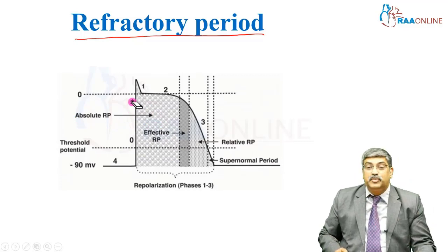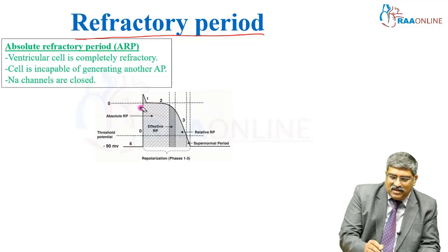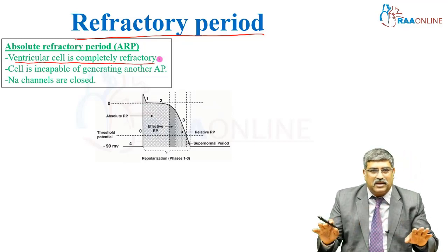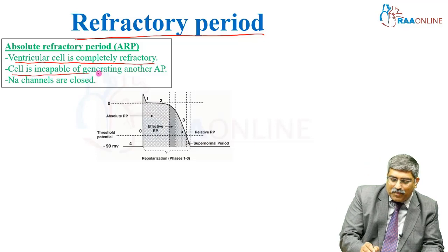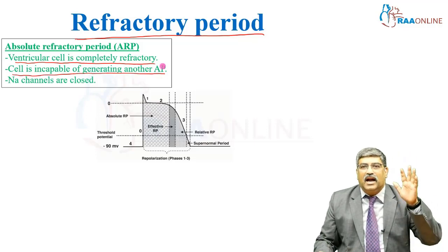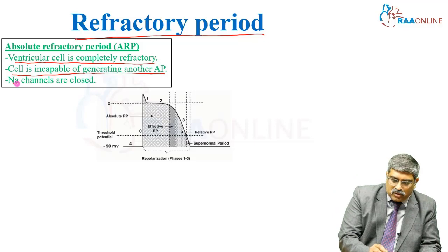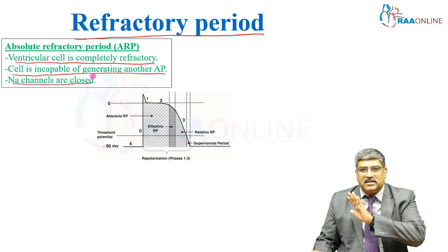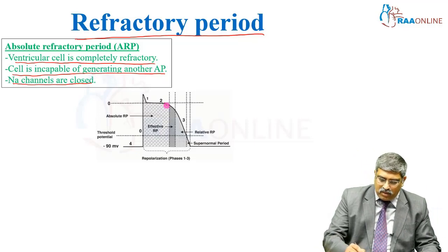What is the absolute refractory period? Here, the ventricular cell is completely refractory. The cell is incapable of generating another action potential and the sodium channels are closed. The cells are not excitable at all — this is the absolute refractory period.